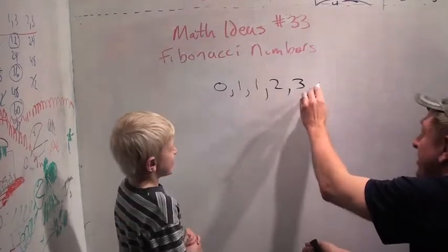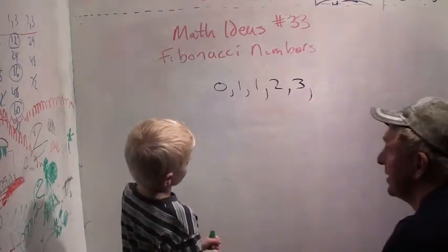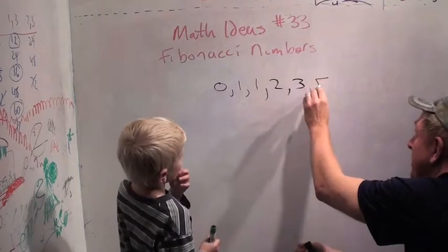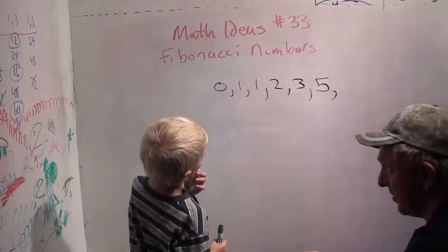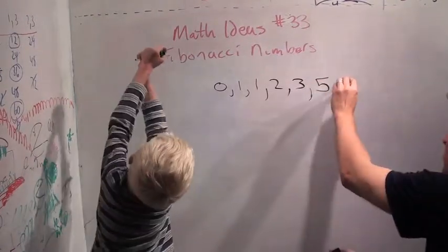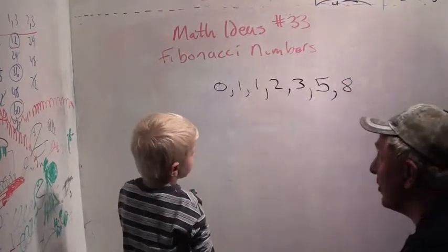Okay, so what's the next number here? Five. Five, because it's three plus two. And what's the next number? Eight. Eight.